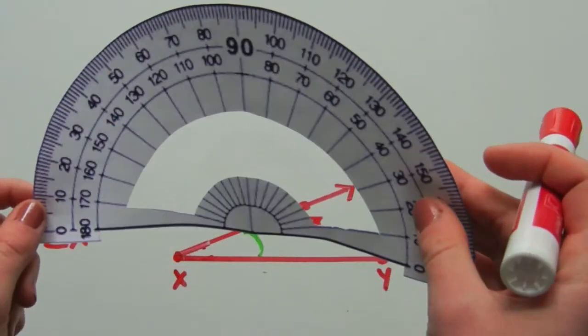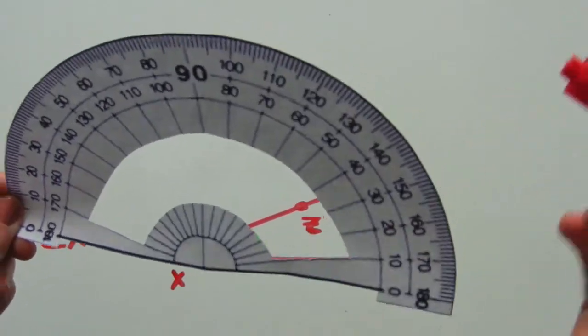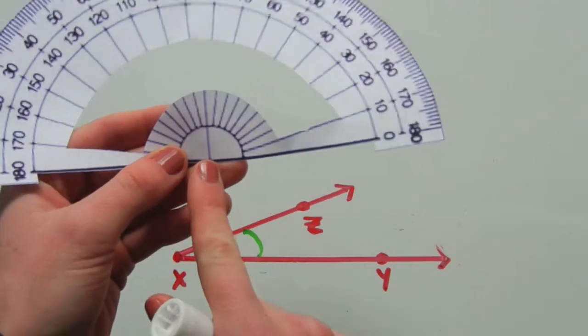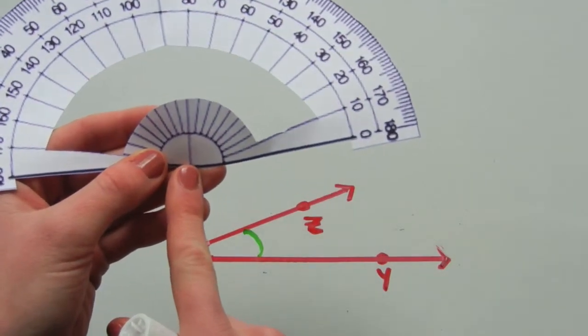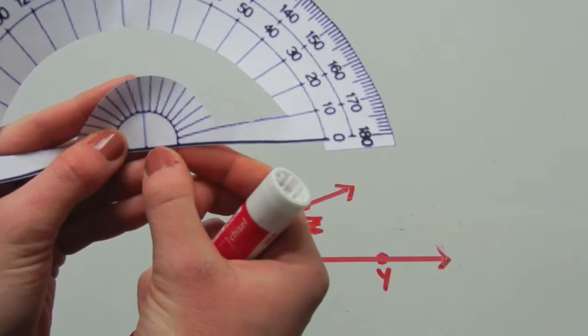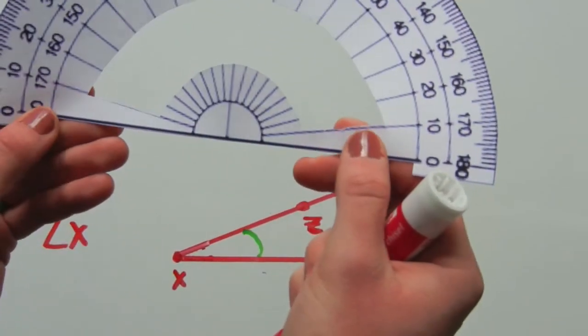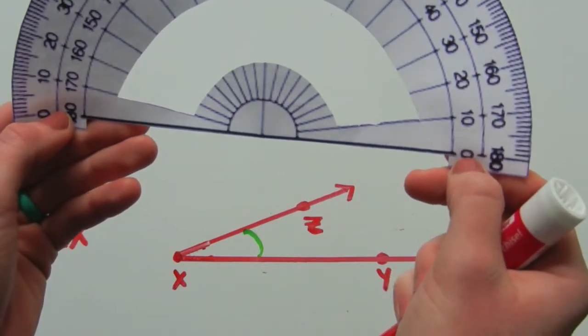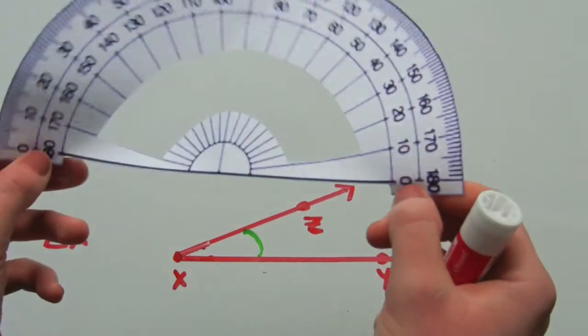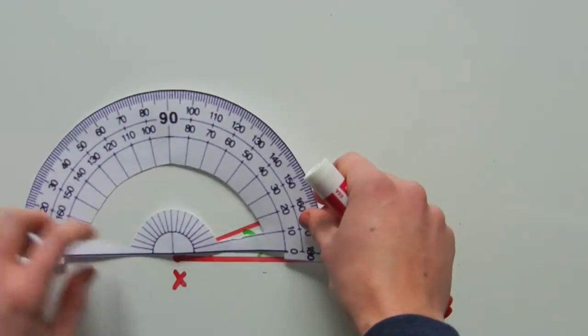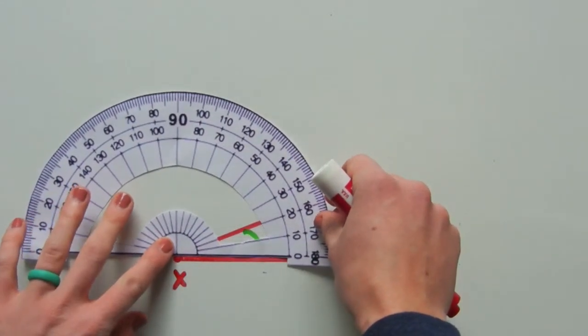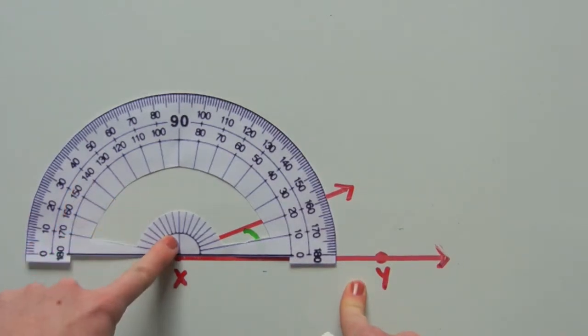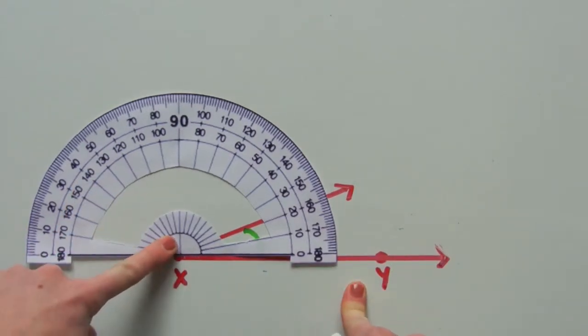But we're going to use this to understand and learn how to measure an angle. So the first step in measuring an angle is to put the center tick mark on your endpoint and line up this bottom horizontal line, usually marked by a zero, on one of the rays. So let's line it up on XY. So this side, XY, is where we have lined our protractor up.